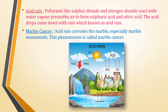Acid rain: pollutants like sulfur dioxide and nitrogen dioxide react with water vapor present in air to form sulfuric acid (H2SO4) and nitric acid (HNO3). The acid drops come down with rain, which is known as acid rain.